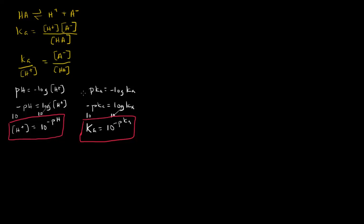Ka, H-plus. So we can replace this with the Ka is equal to 10 to the negative pKa over the H-plus concentration is 10 to the negative pH. So if we're given both the pKa and the pH, we want to find the base-acid ratio. We can just simply plug this in, and that's what we get as our ratio.